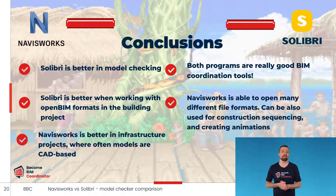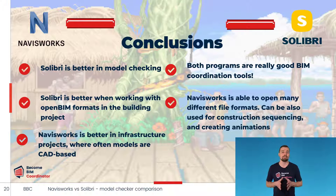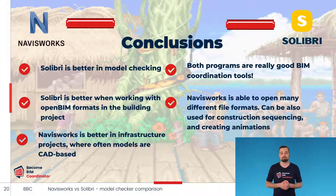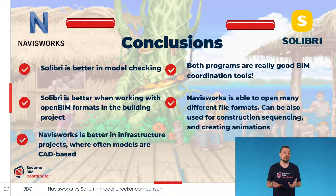After three rounds, you would probably want to hear a final definitive verdict. I hate to disappoint you, but there isn't a clear winner here. Both programs are really good BIM coordination tools. While Solibri has more possibilities than Navisworks for checking BIM models and adjusting coordination to our needs, it is limited to opening only IFC, DWG, and PDF files. On the other hand, a big plus for Navisworks is that it's able to open many different file formats, and it also has useful features that Solibri doesn't, such as creating 4D construction sequences and animations.